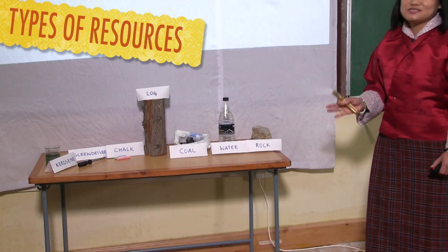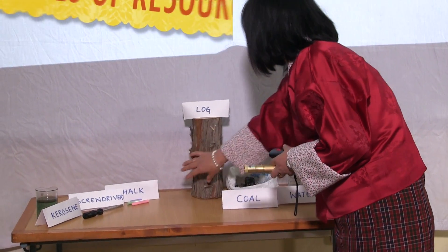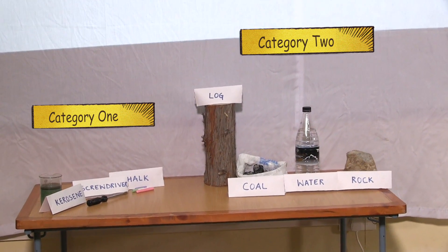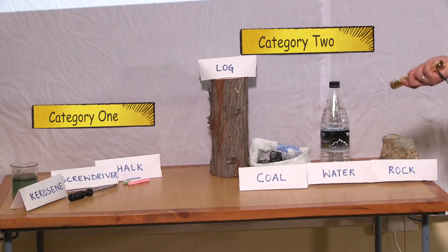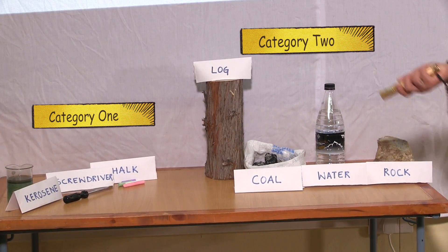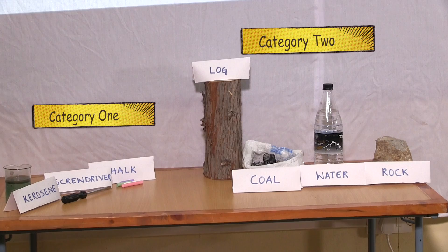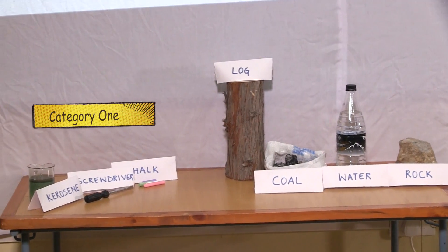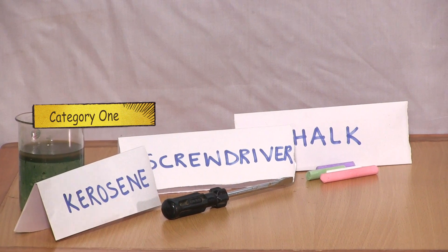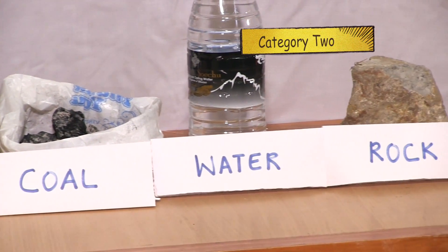I'm going to segregate resources into two categories. You'll see I have grouped resources into two categories. Can you tell me what difference you see between these two categories? In the first category, we have carousel, screwdriver, and chalk. In the second category, we have log, coal, water, and rock. We are going to discuss types of resources. This flowchart indicates there are different types of resources — basically two types: natural resources and human-made resources.